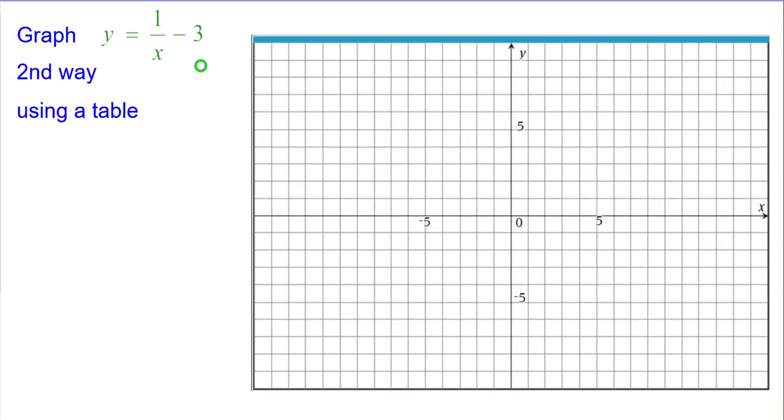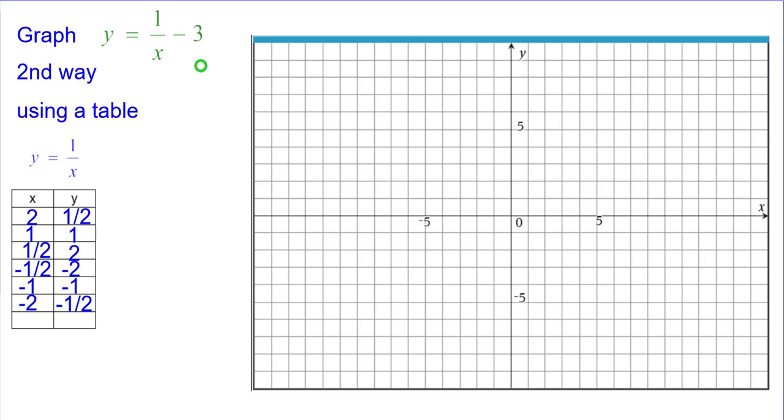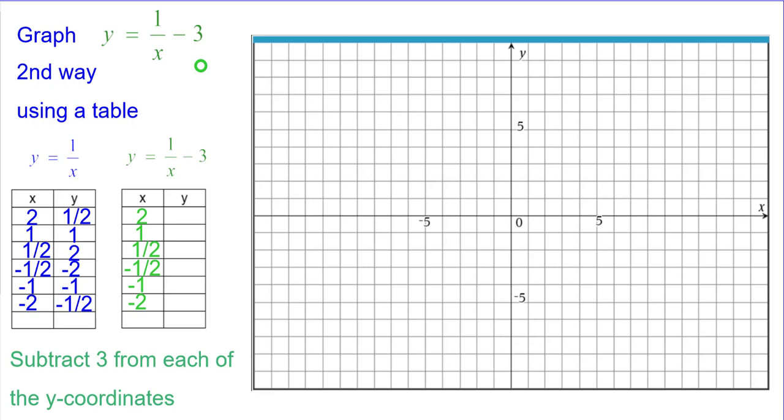The second way is using a table. So we're going to use these six points in our traditional y equals 1 over x table. And we're going to subtract 3 from each of the y coordinates because that's what it says to do in the equation.